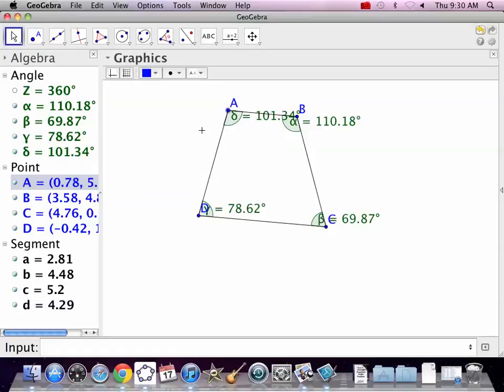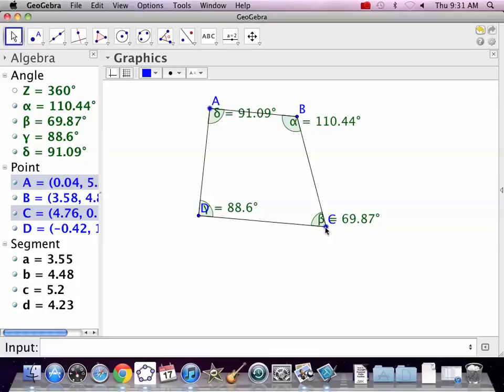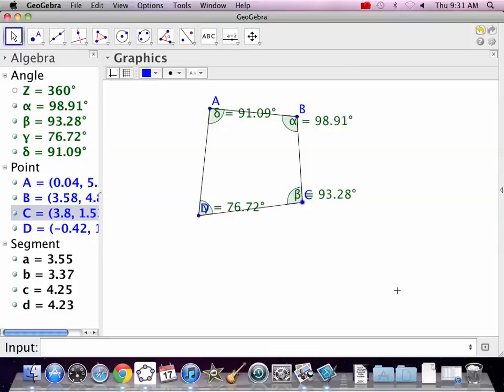It's just a four-sided figure. Now, when we start making special things happen, make things parallel, make things congruent, we get other names for things. That is what's coming up next.